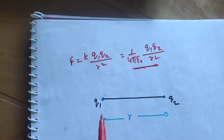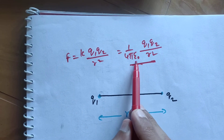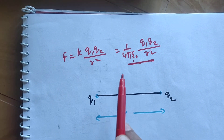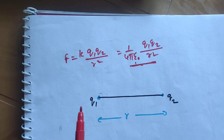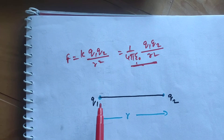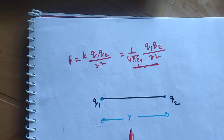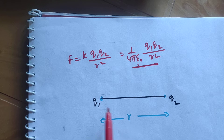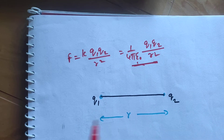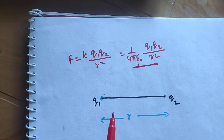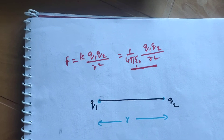This is the case when the charges are separated in vacuum. Here, ε₀ is the permittivity of free space, the separation is R, and the magnitudes of charges are Q1 and Q2.